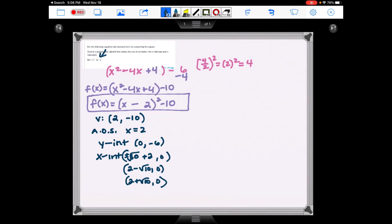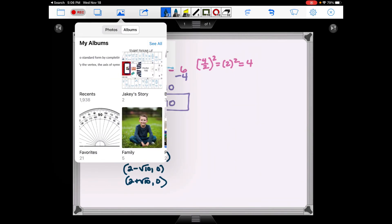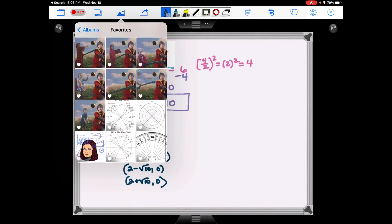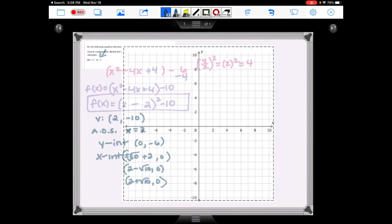Now I'm going to bring in the coordinate grid. I'm going to plot my coordinate points. So (2, -10). (0, -6). We said this was approximately -1.2 and approximately 5.2. And then I'm going to connect my points.